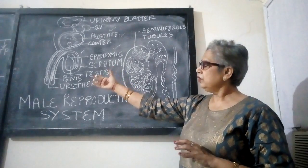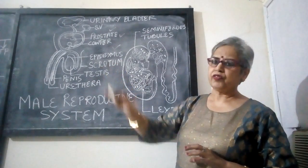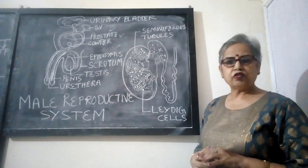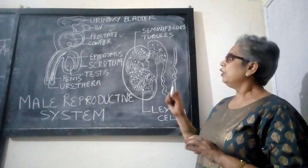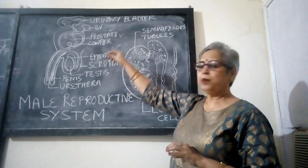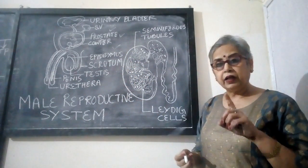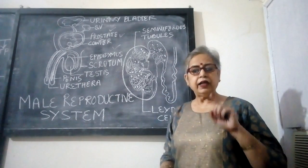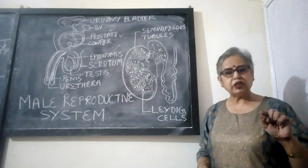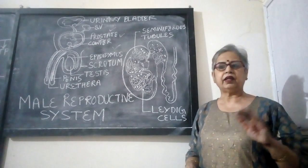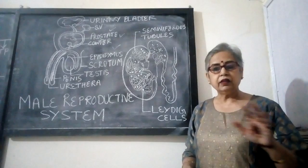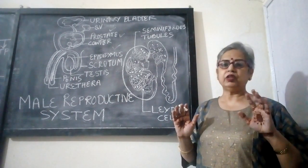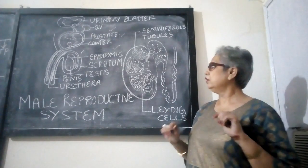During the sexual act, semen is transferred into the vagina or genital tract of the female and the process completes. Another function of the urethra is to pass out urine — that is, micturition — but it can perform only one function at a time. When micturition takes place, ejaculation will not take place; that is, when the person is passing urine, he cannot ejaculate, and when ejaculation is taking place, urine cannot be passed.